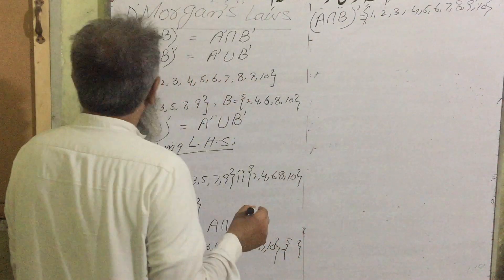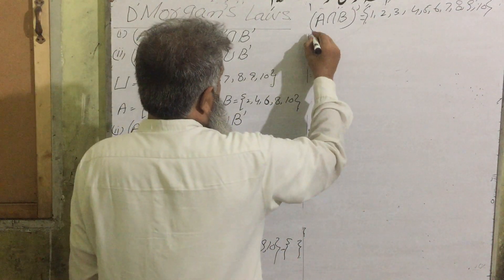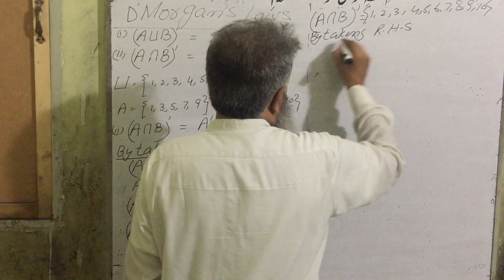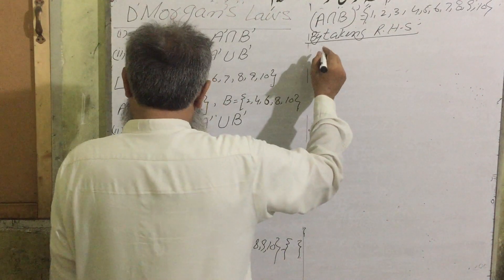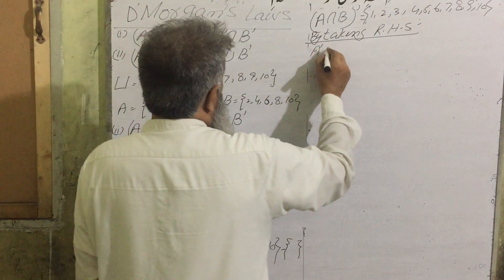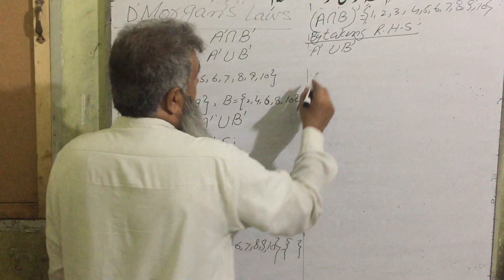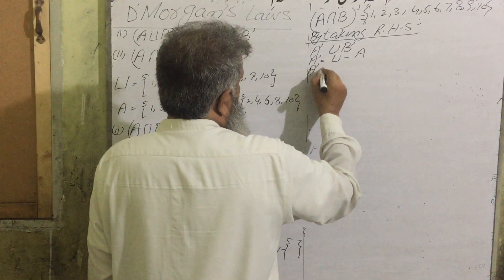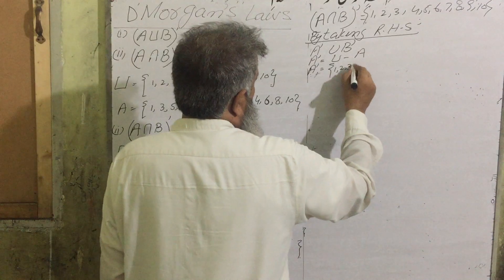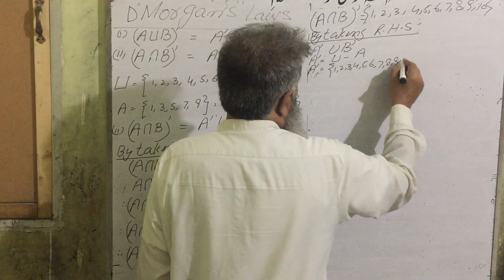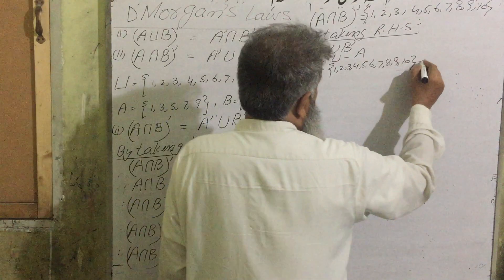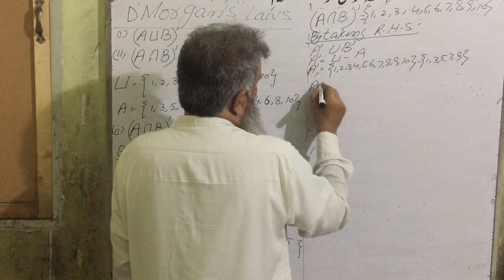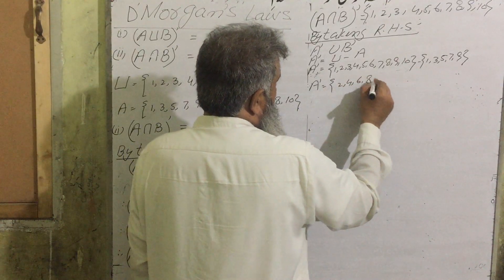Now by taking the right hand side: A complement union B complement. A complement = universal set minus A = {1,2,3,4,5,6,7,8,9,10} minus {1,3,5,7,9}. So A complement = {2,4,6,8,10}.